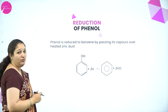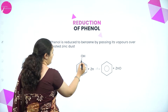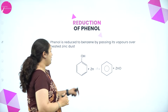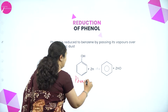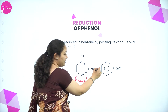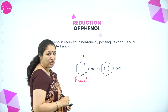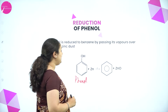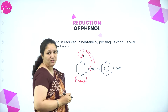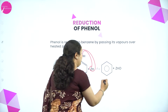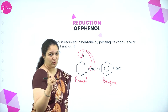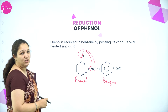Next is reduction of phenol. If you have a benzene ring with an OH group, we call this phenol. If you treat it with zinc dust and heat it — heating is shown with a triangle above the arrow — zinc will take up the oxygen to form zinc oxide, and hydrogen will get substituted there to give benzene. This is the second method of preparation.